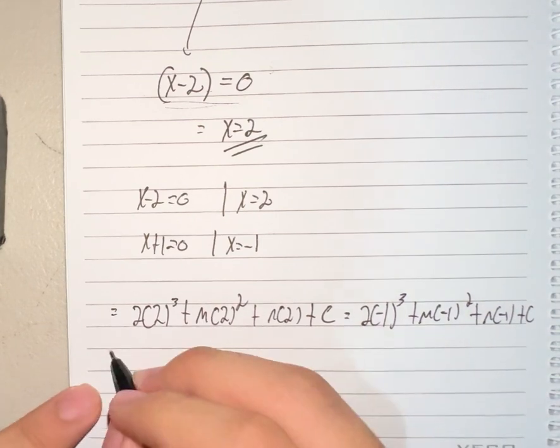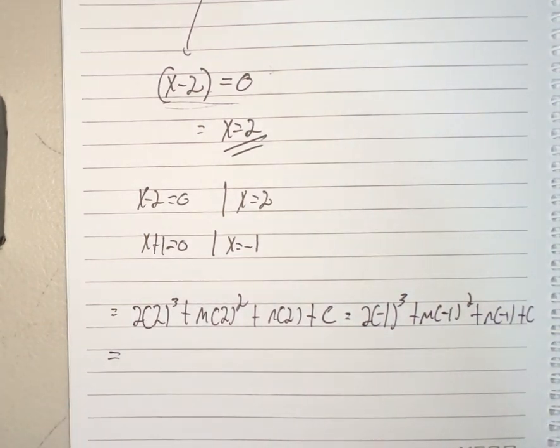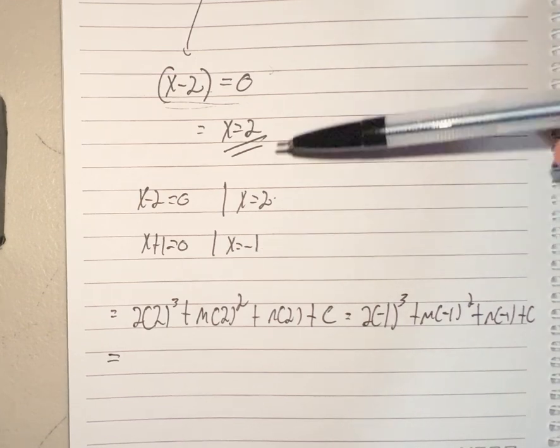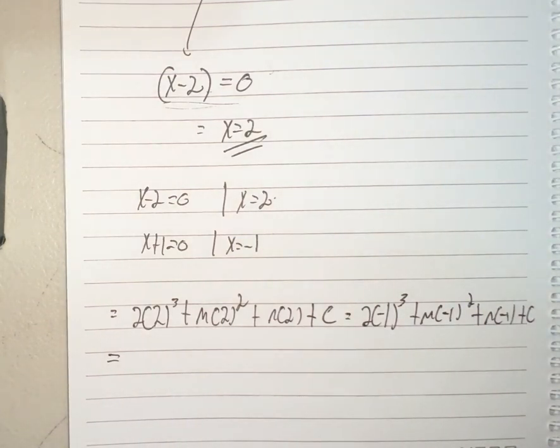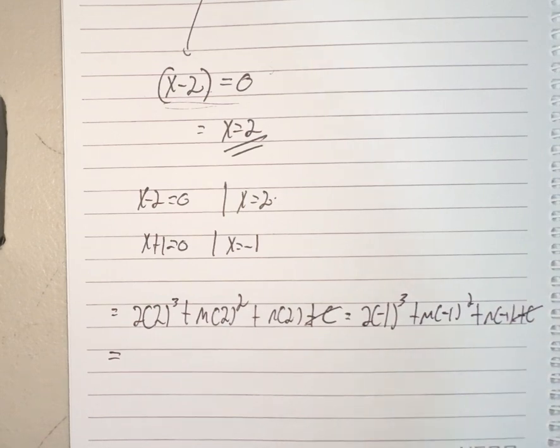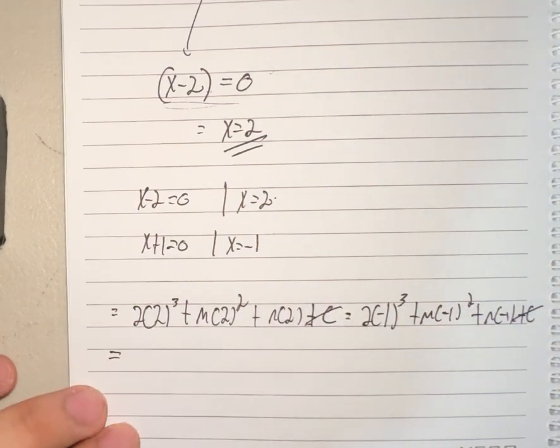Now, 2 times 2 cubed plus m times 2 squared plus n times 2 plus c equals 2 times negative 1 cubed plus m times negative 1 squared plus n times negative 1 plus c. Why are they both equal? Because, as I said, if we substituted these two x's together, they should equal to the same function value or the same remainder. Now we basically just solve. These two c's here cancel out.